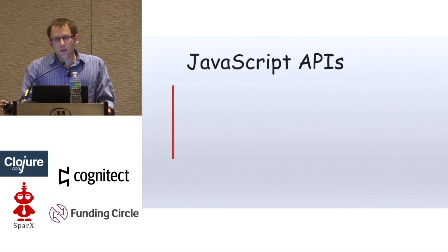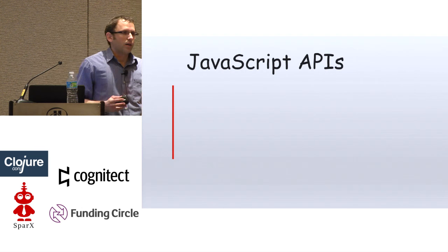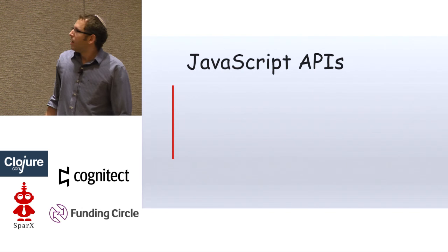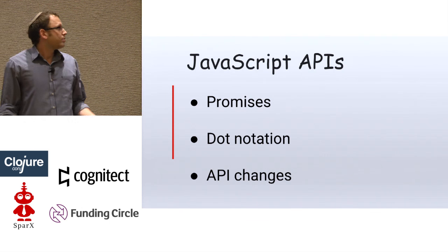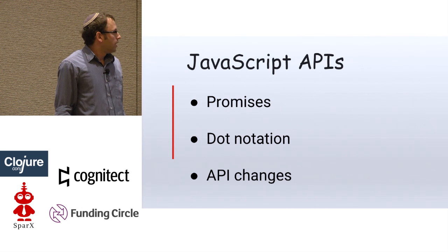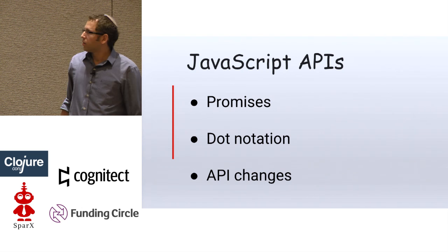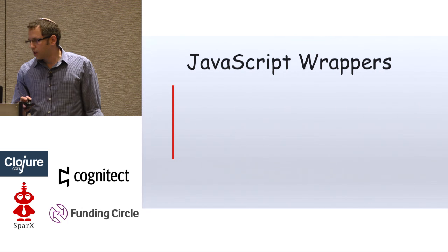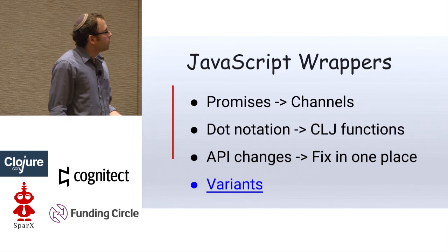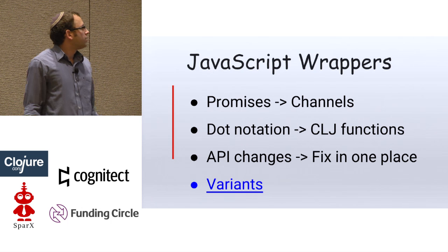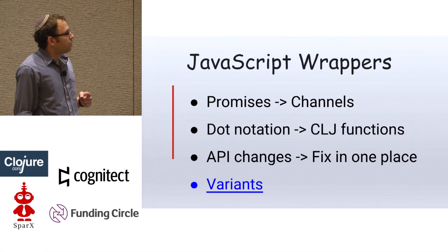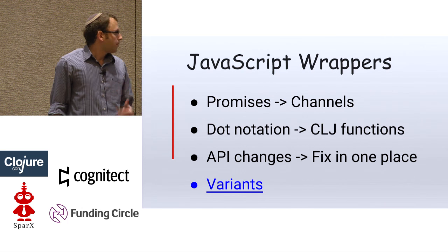Topic number two: JavaScript APIs. Since we are working with the web, there are multiple APIs and objects we'd like to work with. The problem is that it's JavaScript — it has promises, dot notation, and if these are new APIs like we use at Audix, they could have many changes along the way. The solution is what we call JavaScript wrappers: we take promises and turn them into core.async channels, and dot notation we turn into Clojure functions. API changes will then only need to be fixed in one place in the wrapper.